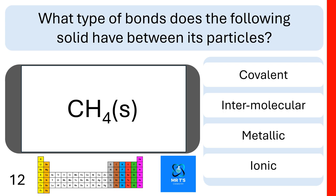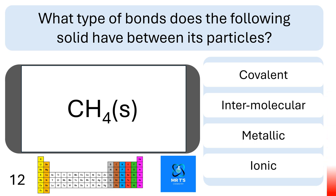Question twelve: what type of bonds does a methane solid have between its particles? Are they covalent bonds, intermolecular bonds, metallic bonds, or ionic bonds? Well done if you got the correct answer of intermolecular bonds.